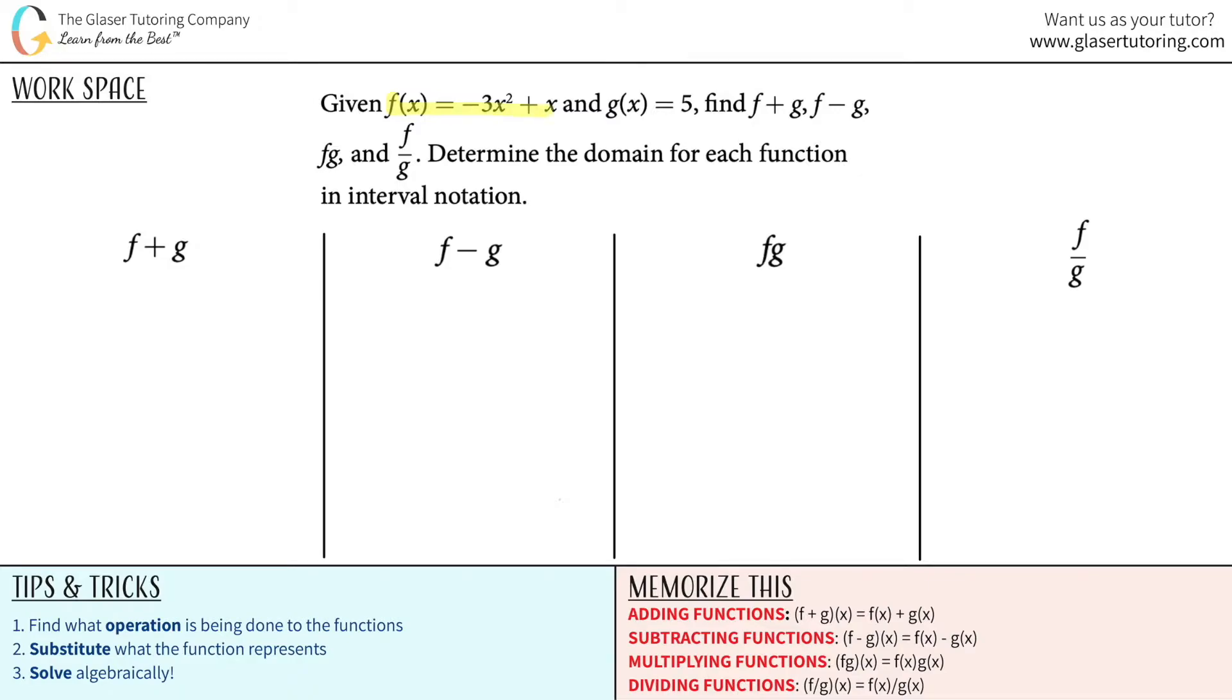Given f of x equals negative 3x squared plus x and g of x equals 5, find f plus g, f minus g, f times g, and f divided by g, and then determine the domain of each function in interval notation.